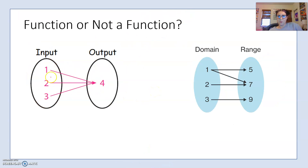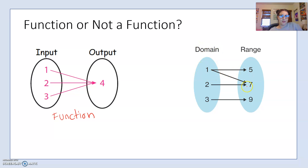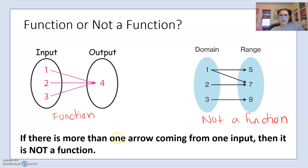In this example I have one, two, and three — three inputs going to one output. Even though they all go to the same output, each input still has only one output, so this is a function. But here I have one going to five and seven, so this input has two outputs — that goes against the rule, so this is not a function. A quick tip: if there is more than one arrow coming from one input in a mapping diagram, it is not a function.